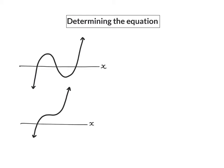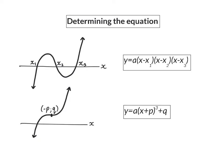If a graph is given in the first form together with its three x-intercepts, the following formula can be used to determine the equation. If a graph is given in the second form, then the stationary inflection point coordinates will be given and you can use the following formula to determine the equation.